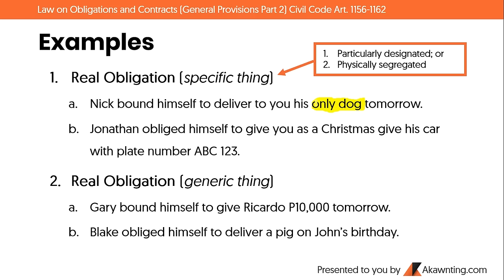If we reconstruct the sentence to 'Nick bound himself to deliver to you a dog tomorrow,' it becomes generic — he could deliver any dog. But because of the word 'only,' the obligation refers specifically to his one and only dog at that moment the obligation was made.